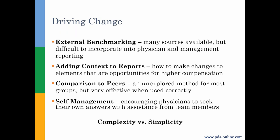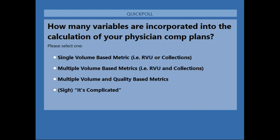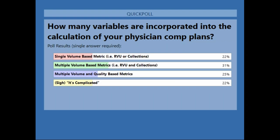We'd like to take another survey poll and ask: how many variables are you incorporating into your physician compensation plans? Do you have a single value-based metric like pure RVUs, are you doing multiple volume-based metrics, or a combination of volume metrics and quality-based metrics, or do you have so many that it's all too complicated? It looks like we've got about a third doing single or multi volume-based, a few doing volume and quality-based, and then a small percentage that have too many to even want to talk about.